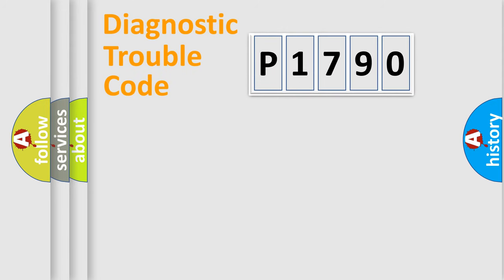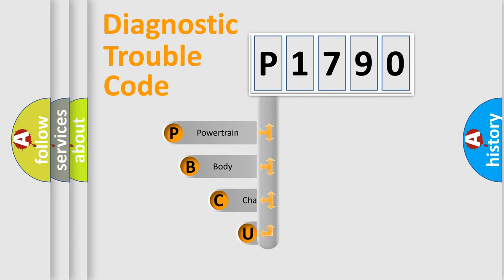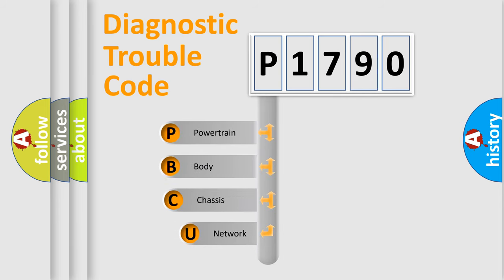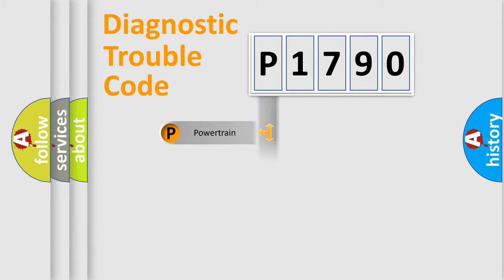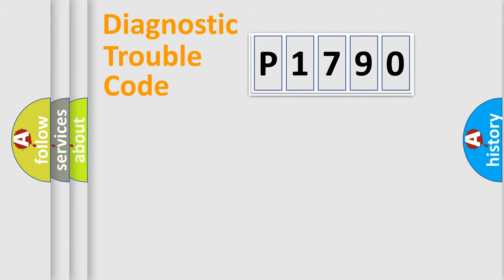Let's do this. First, let's look at the history of diagnostic fault code composition according to the OBD2 protocol, which is unified for all automakers since 2000. We divide the electric system of the automobile into four basic units: Powertrain, Body, Chassis, and Network.